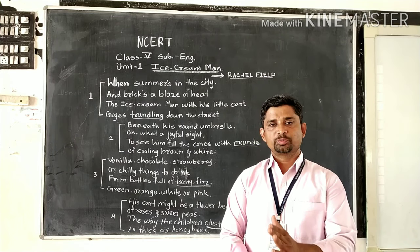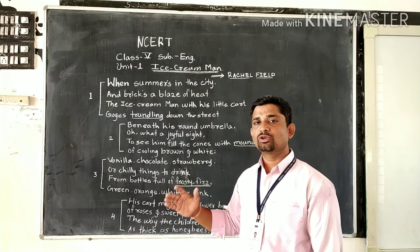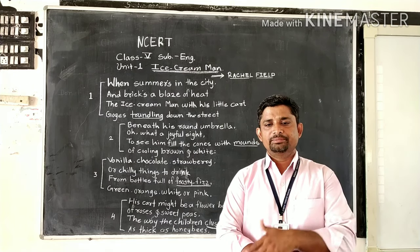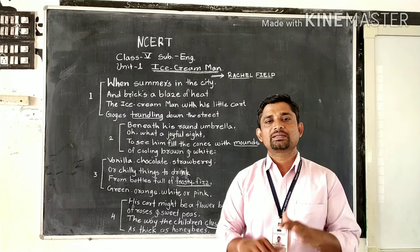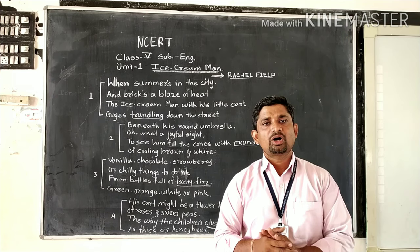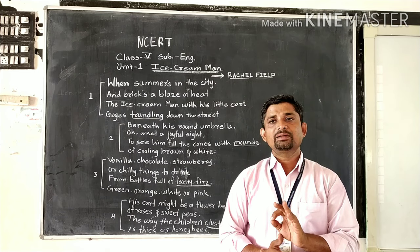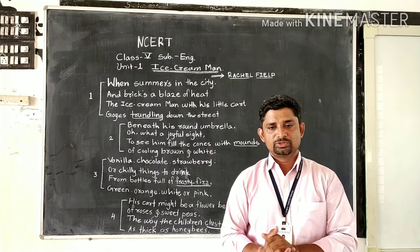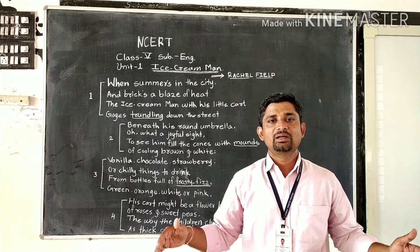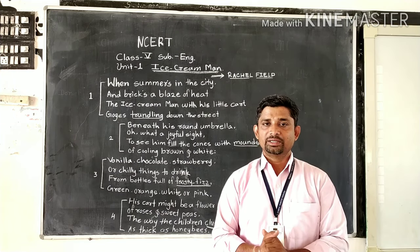Here the poet uses a figure of speech called simile, comparing the cart to a flower bed. Just as in a garden there is a flower bed where many honeybees gather, the poet compares the honeybees to the children. Many children cluster round — cluster means to gather — and make a group near his little cart. So the poet writes 'as thick as honeybees.'